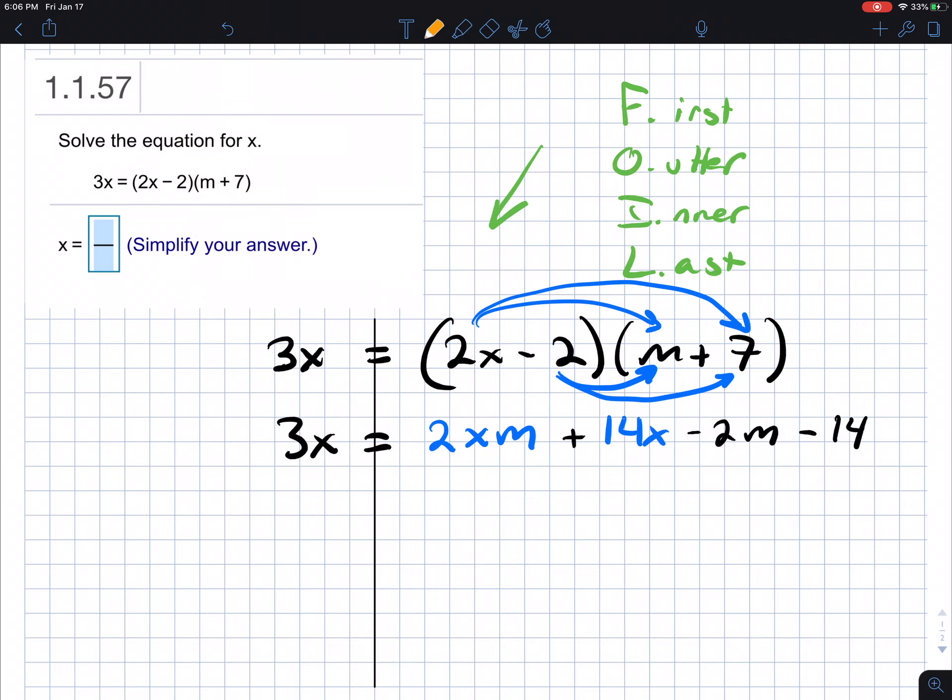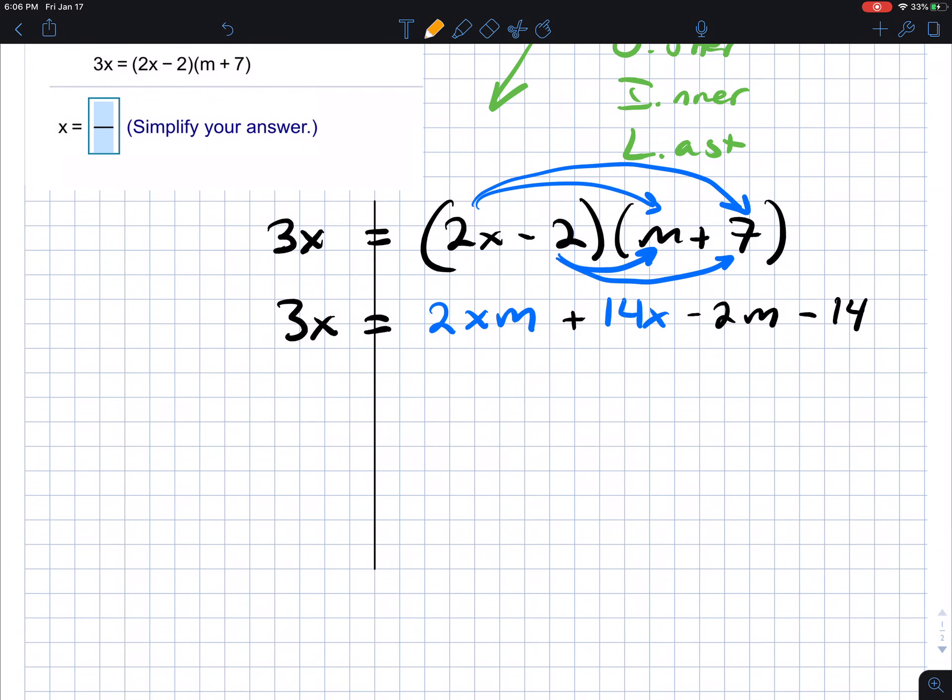Notice that this one is positive or it's essentially a plus in front of it. What's the inverse operation of addition is going to be subtraction. So essentially what we're going to do, we're going to add a negative 2xm on both sides. Also, we're going to move the 14x. So the inverse property of plus 14 is going to be minus 14x.